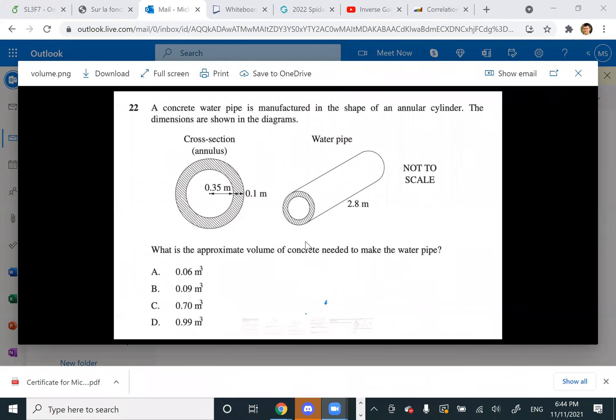22 is my lucky number, let's go. A concrete water pipe is manufactured in the shape of an annular cylinder. What is the approximate volume of concrete needed to make the water pipe? So when I did this, do you make water pipes out of concrete? Yeah, I know that's what the hell.